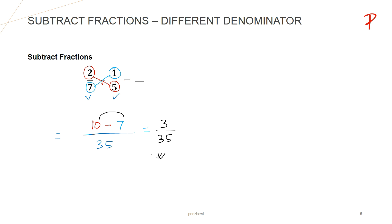If possible, we can further reduce this fraction, but this fraction is already in simplified form, so we cannot simplify it further. 3 upon 35 is the answer. I hope you understood this fraction concept, and I will bring more fraction examples and concepts in my next coming videos.